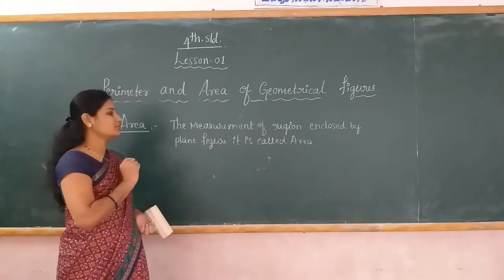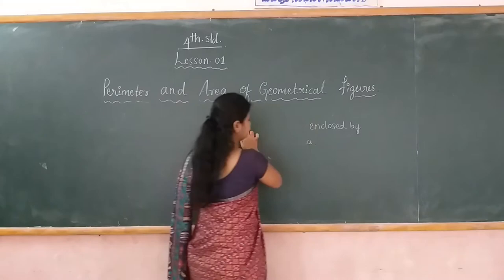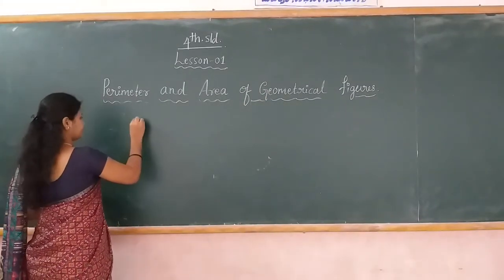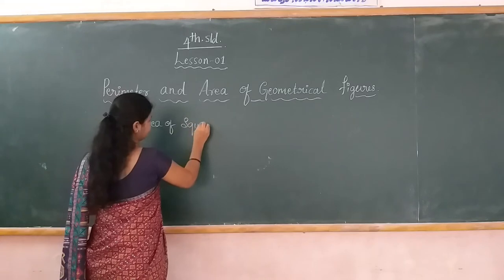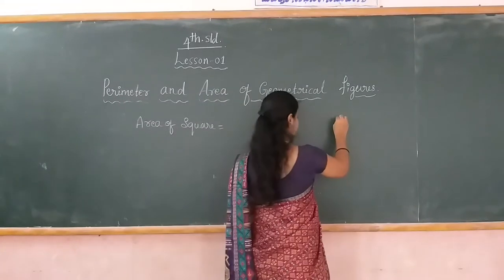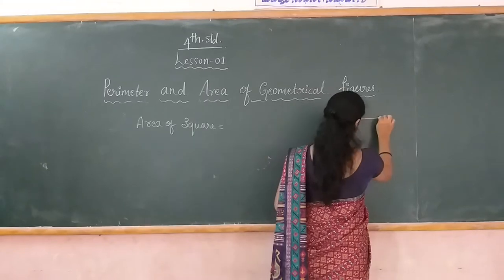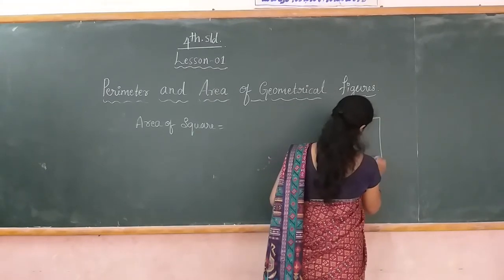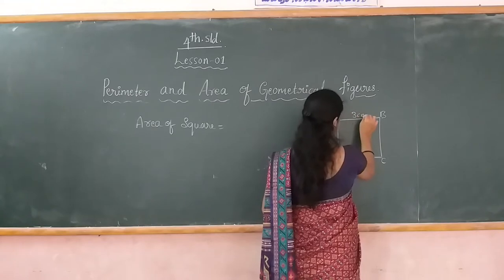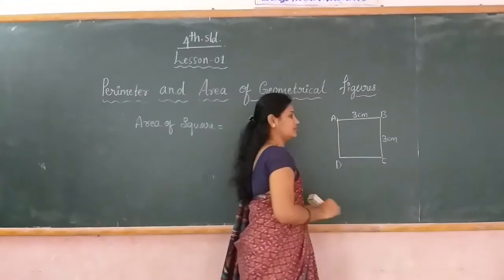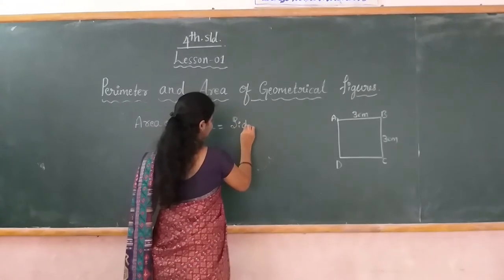Then we move to how to find the area of the square. I draw this square ABCD. The length is 3 cm. In a square, all sides are equal. Therefore, the area of the square formula is equal to side into side.